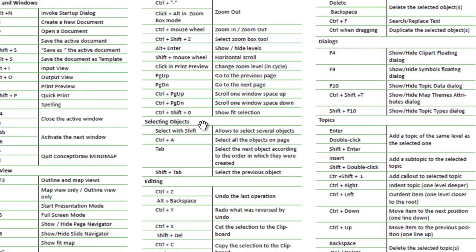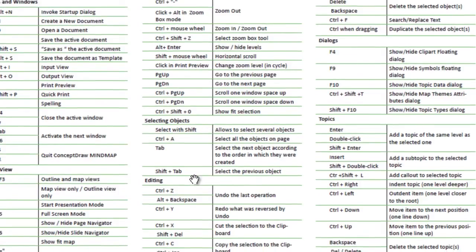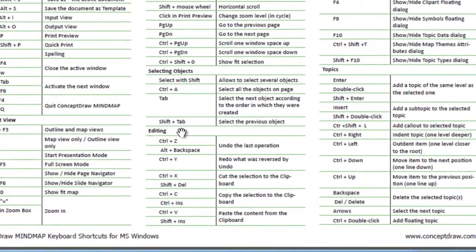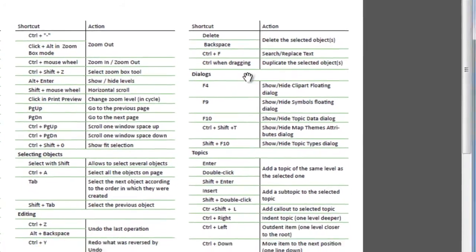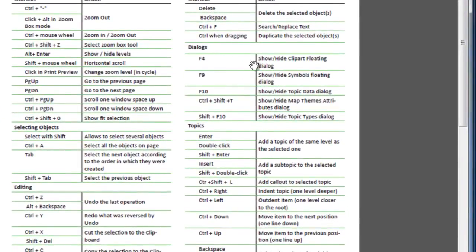The Selecting Objects group contains shortcuts for selecting objects on the map. The Editing group contains shortcuts for editing maps such as undo, redo, cut, copy, delete, paste, search and replace text, and duplicate. The Dialogues group contains shortcuts for clipart, symbols, topic type, topic data, and map themes dialogues.